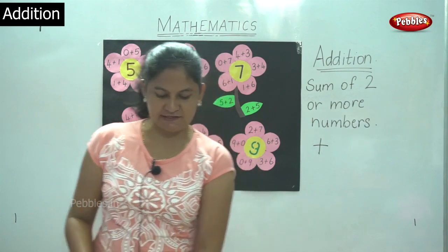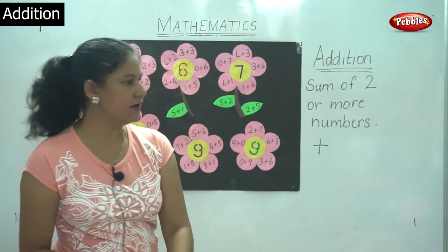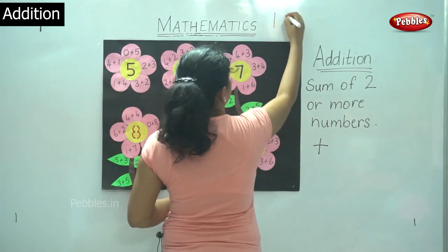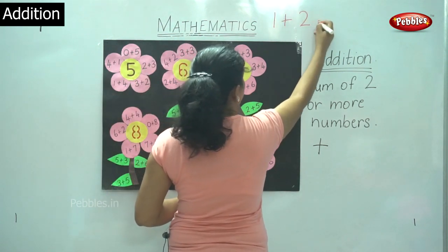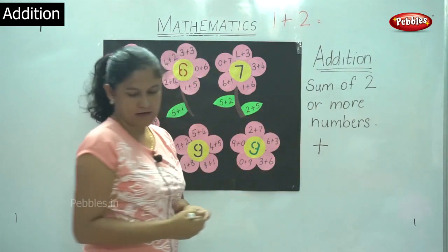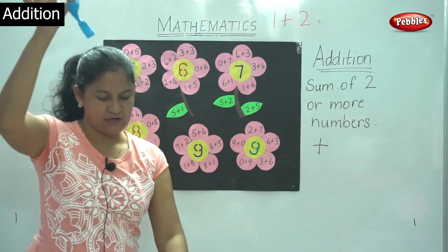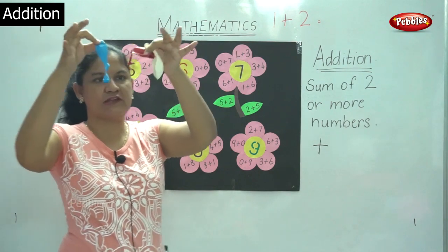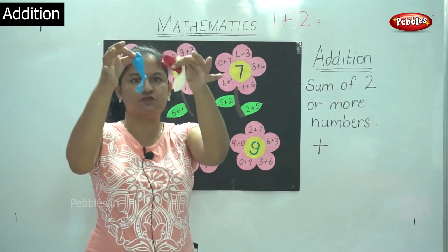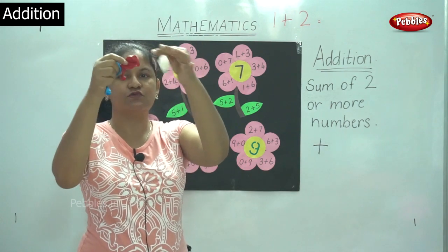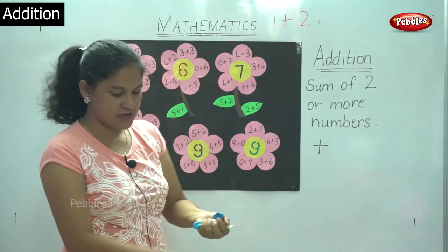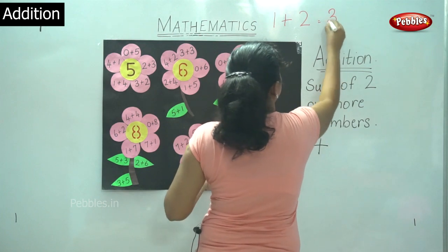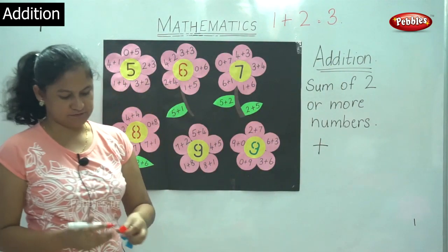So when I say 1 plus 2, I take 1 balloon plus 2 balloons. I am going to total up these three balloons. So it is 1, 2 and 3. So I have three balloons with me.